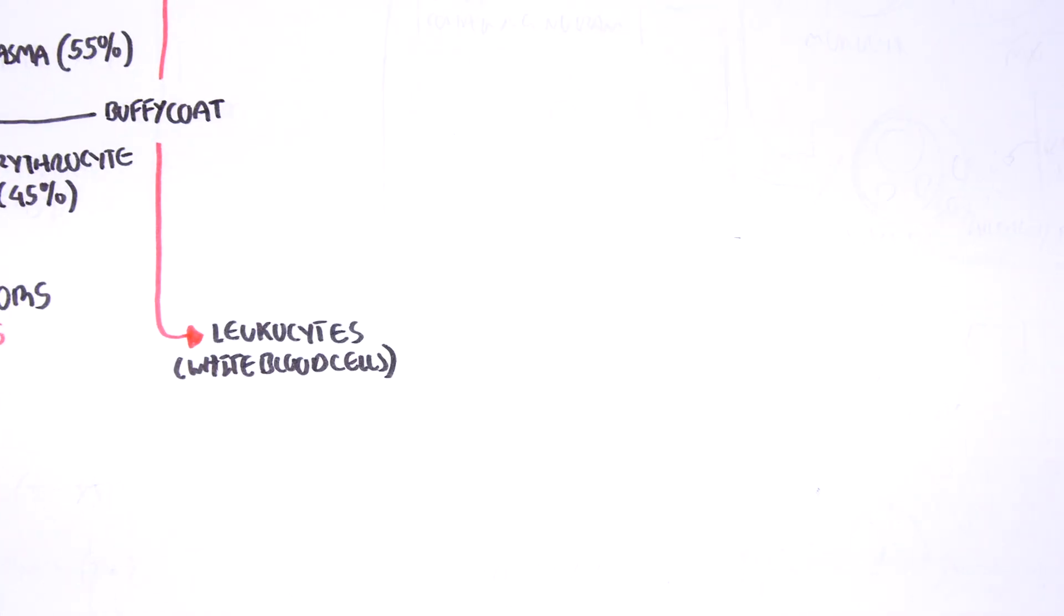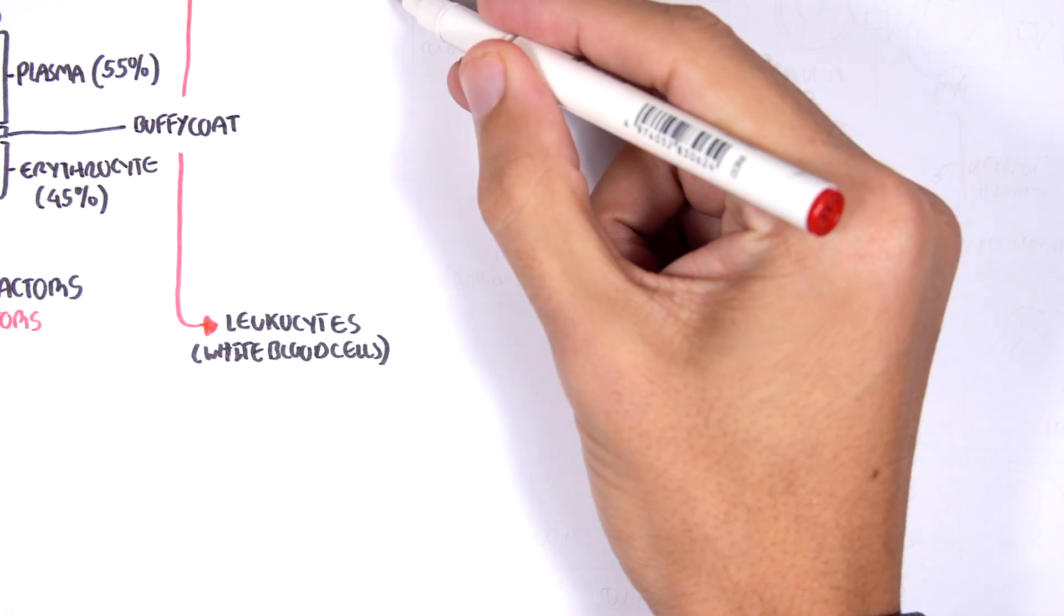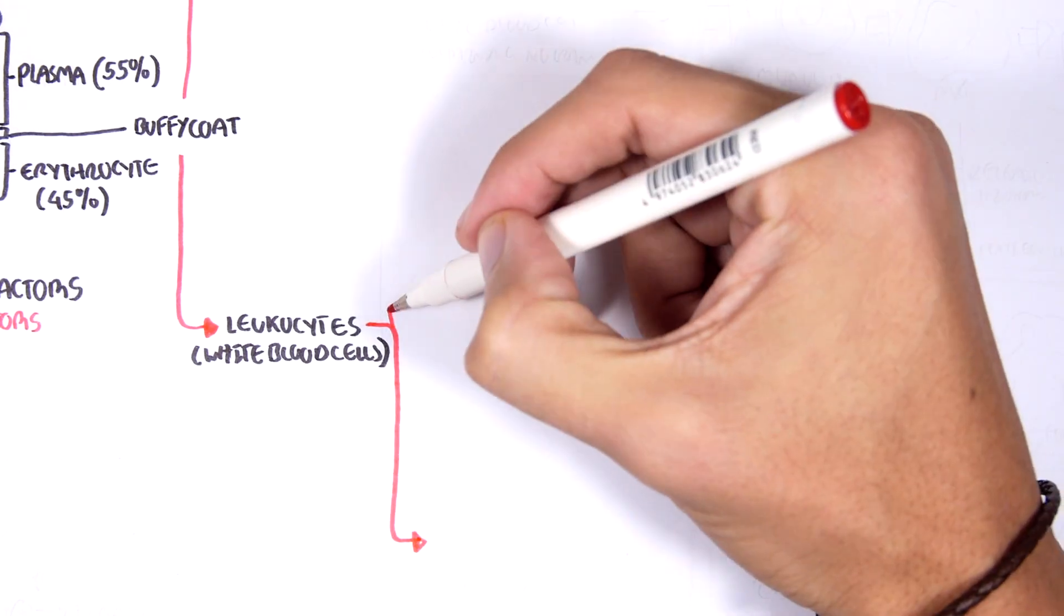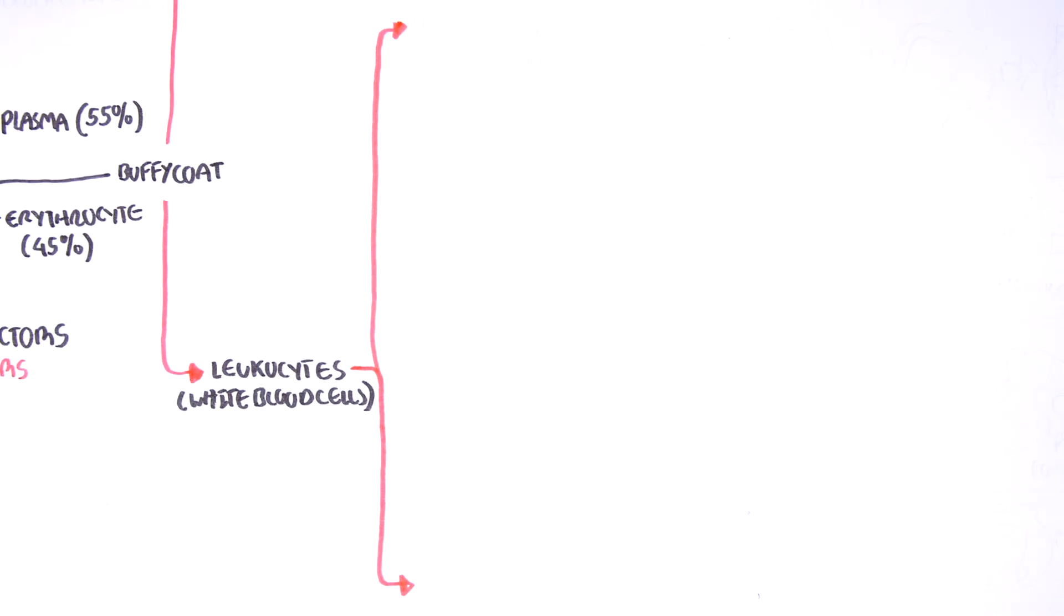Now the other component of the buffy coat layer are leukocytes or white blood cells. Now there are so many types of white blood cells and what they do is that they help our body fight infections. So they're essentially the immune response.